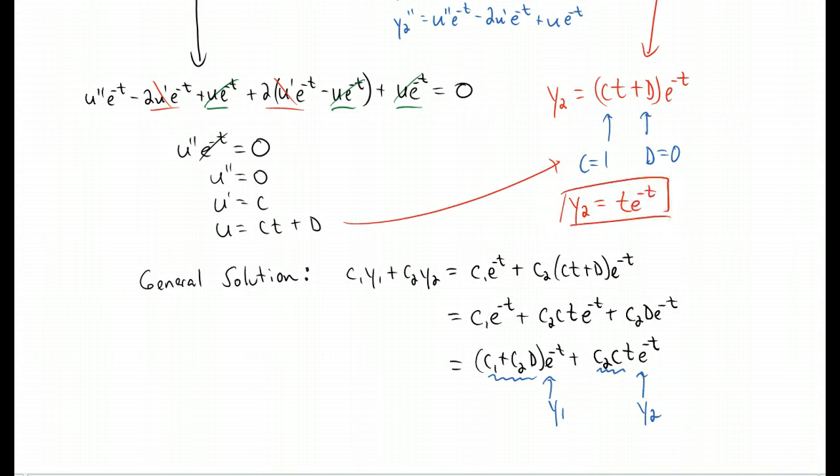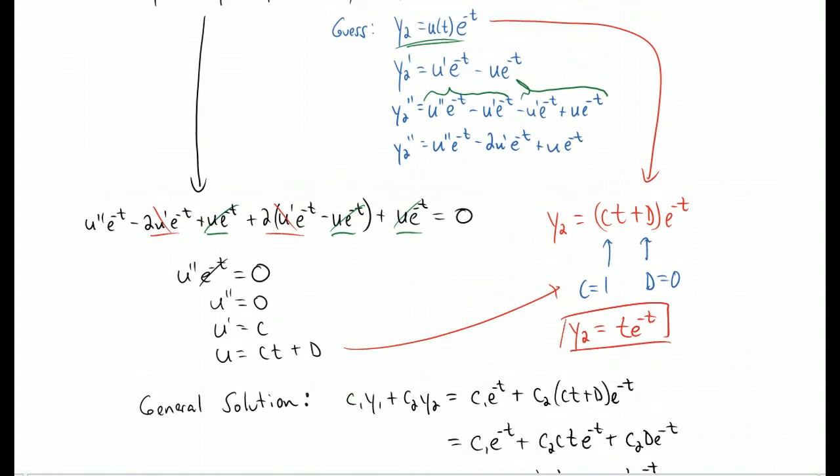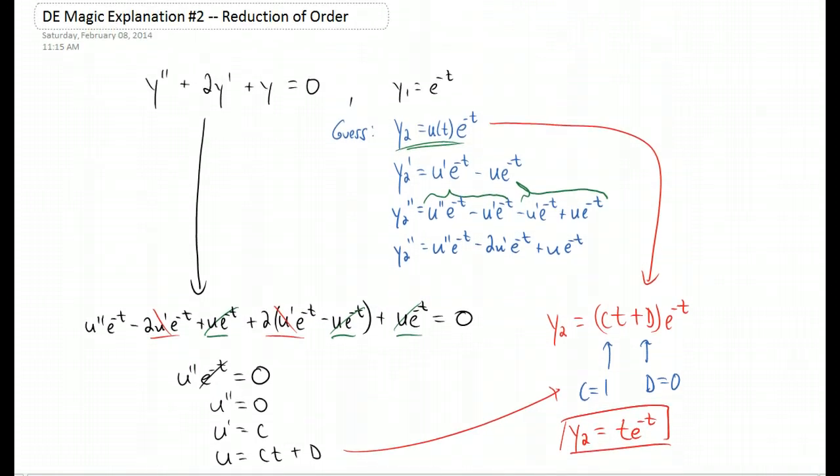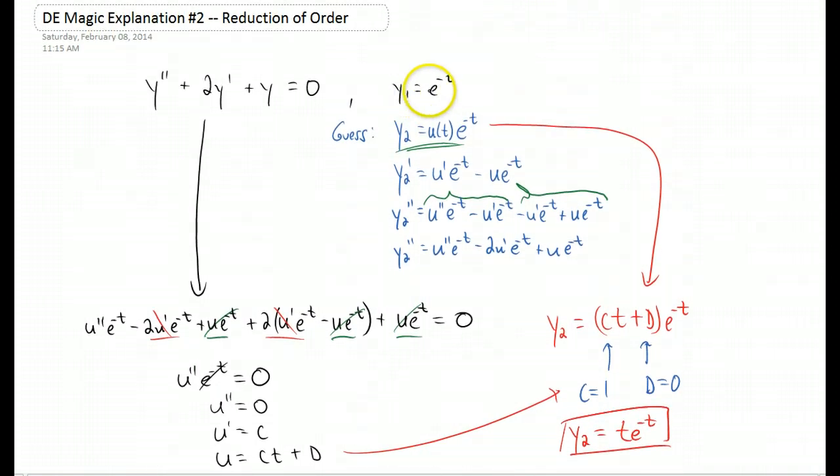Okay, let me run through what we just did there because I know that was a bit much. The method of reduction of order. We're always given one solution to the differential equation, but we want to find a second linearly independent solution to the differential equation. So we actually guess the first solution times some function, and the goal is to figure out what that function is.